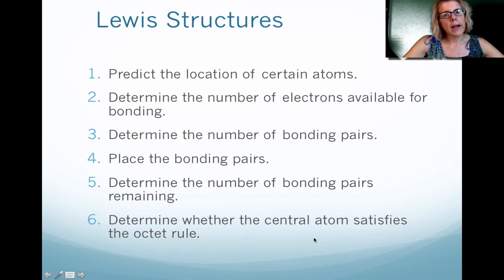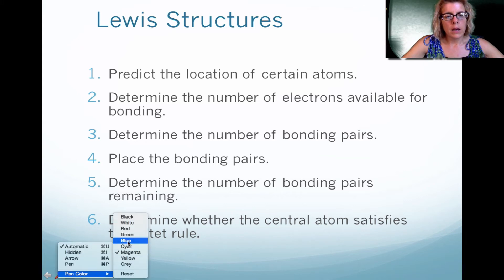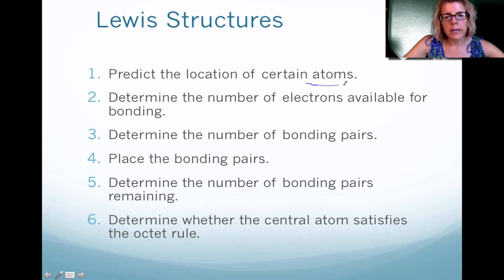Okay, Lewis structures. What I would recommend is write down this list, and then when you draw your own Lewis structures, you want to follow it down the line. First, you want to figure out the location of the atoms. And I'll just tell you, most of the time, you're going to pick atoms that have the most valence electrons. Hydrogen will not be at the center of a molecule. You will have maybe hydrogen bonded with itself, but not in a molecule. You need to determine the total number of electrons that are available. So you want to count up all the valence electrons. And then you want to figure out, if you divide by two, how many bonding pairs are you going to have.